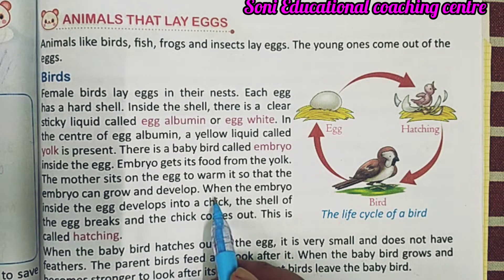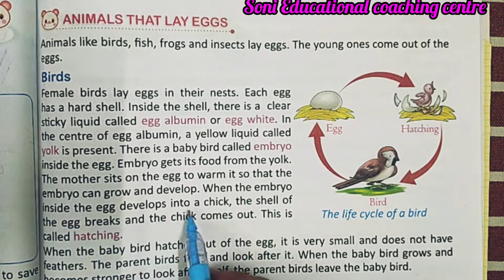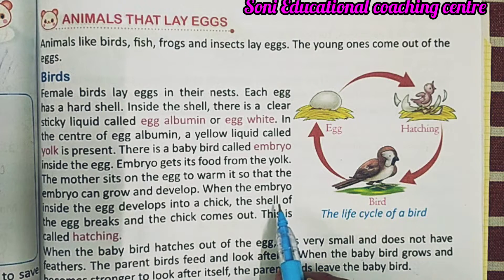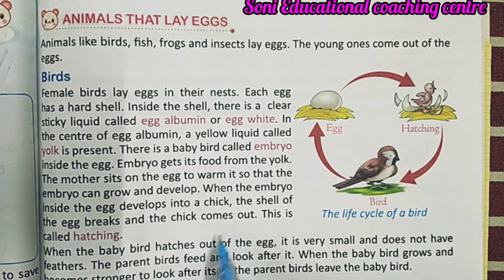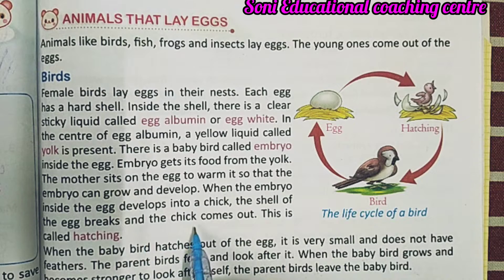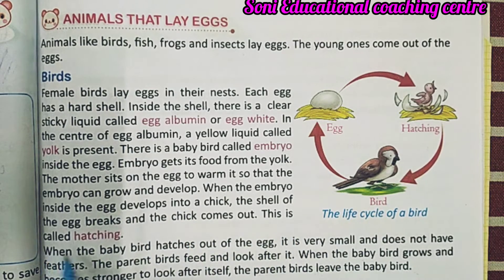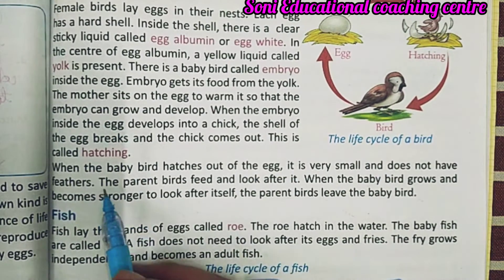When the embryo inside the egg develops into a chick, the shell of the egg breaks and the chick comes out. जब वो छोटा सा बच्चा चिक बन जाता है, अंडा फूट जाता है और उसके अंदर से चूजा बाहर आ जाता है। This is called hatching — और इसको hatching बोला जाता है।